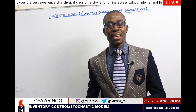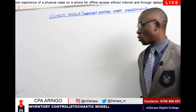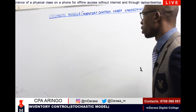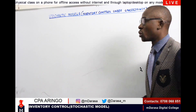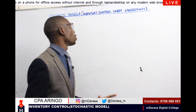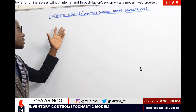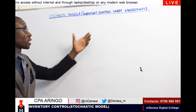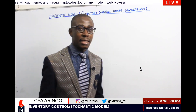So in our class today, it is still a continuation of that. Today we are going to look at inventory control at a whole different level, because we'll be talking about inventory control that is under stochastic models — inventory control under uncertainty.